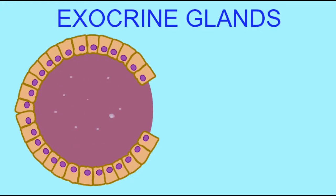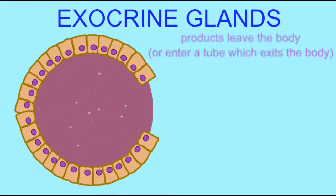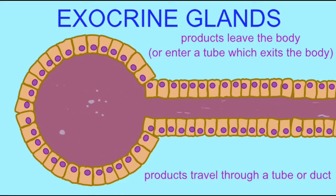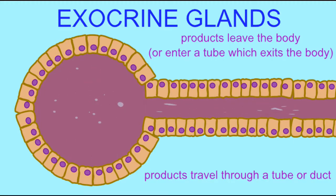Like all glands, mammary glands are derived from epithelial tissue and are exocrine glands. They release their products through tubes or ducts.